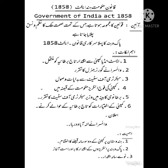برطانوی پارلیمنٹ کا Secretary of State ہندوستان پر حکومت کرنے کے لیے Viceroy کو ہدایات جاری کرتا تھا۔ East India Company کی اپنی ایک فوج بھی تھی جو اب حکومت برطانیہ کے قبضے میں آ گئی۔ Governor General یا Viceroy حکومت برطانیہ کی طرف سے ملنے والی ہدایات کے تحت ہندوستان میں حکومت کرے گا۔ وائسرائے وقتاً فوقتاً آتے رہے اور کل سترہ وائسرائے ہندوستان میں آئے۔